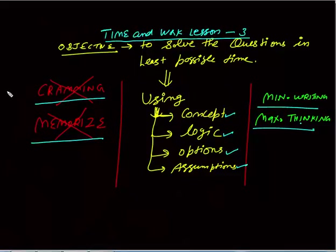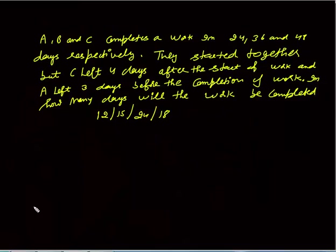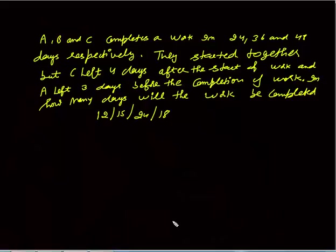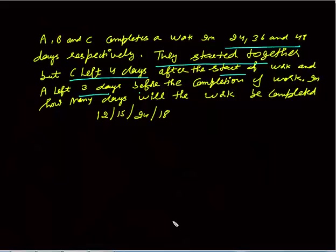Let's discuss the first question. A, B, and C complete a work in 24, 36, and 48 days individually. They all started working together, but C left four days after the start of work, and A left three days before the completion of work. In how many days will the work be completed? The options given are 12, 15, 24, and 18.